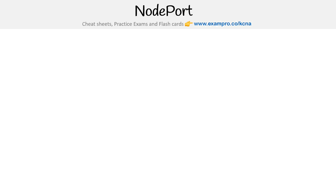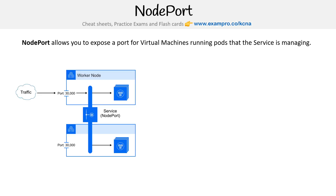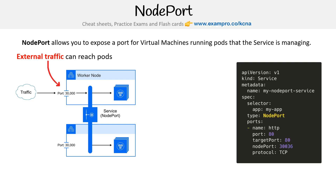Let's take a look at NodePort service. NodePort allows you to expose a port for a virtual machine — a node running pods that the service is managing. This is a way we can get external traffic, and it's the easiest way to get traffic in, but not necessarily the recommended way for production use cases.